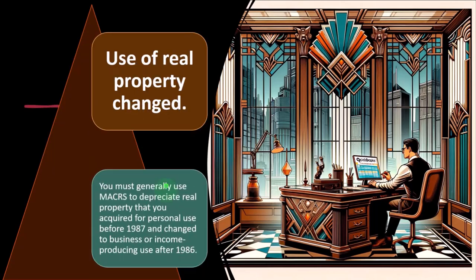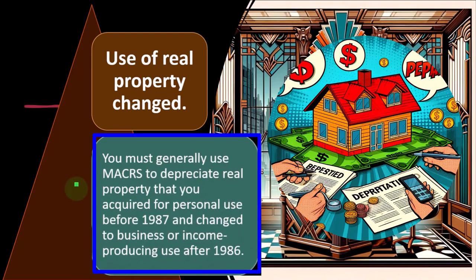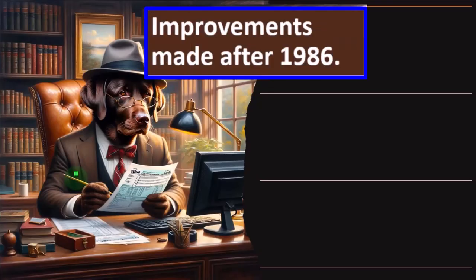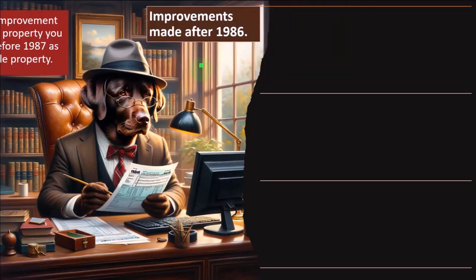You must generally use MACRS to depreciate real property — such as real estate — that you acquired for personal use before 1987 and changed to business or income-producing use after 1986. That gets a little confusing because now we have a situation where the property changed from personal to business, which can cause confusion about what cost to transfer and what the related depreciation rules are. This includes questions about improvements made after 1987.